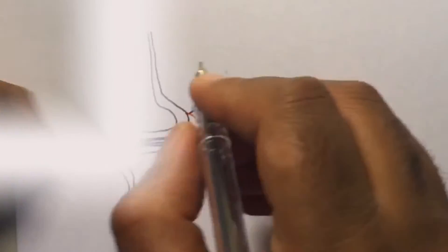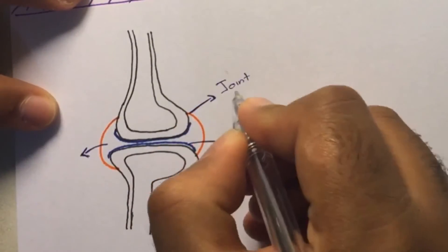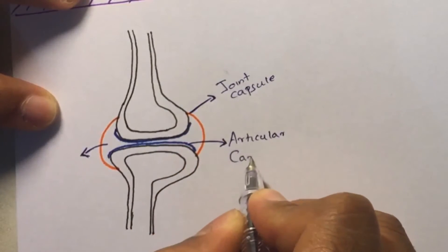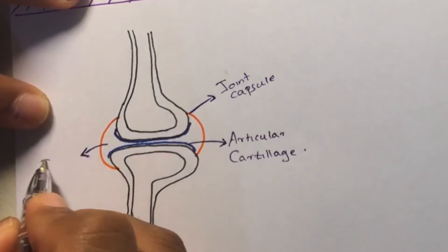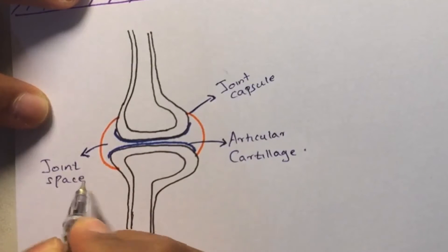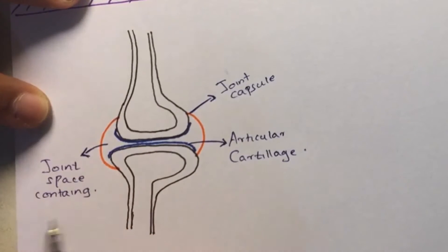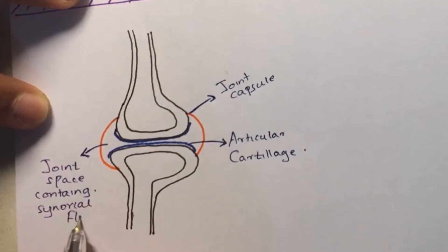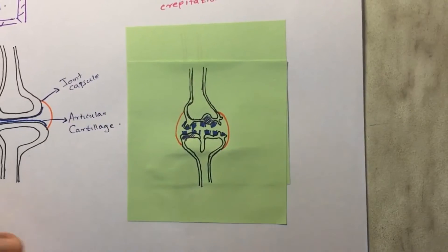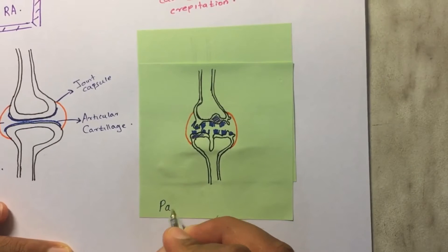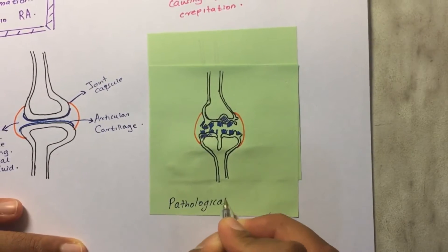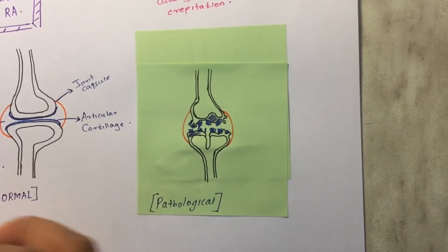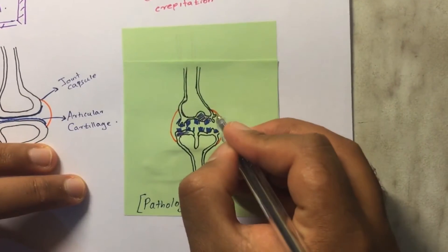This is how a normal joint looks: the joint capsule, the intact articular surface cartilages, and the joint space containing synovial fluid, which is symmetrical on both sides. The next image shows a comparison between a joint with pathology and one without.